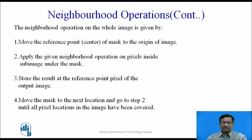Continuing neighborhood operations, the neighborhood operation on the whole image is given by this algorithm. The first step is to move the reference point, that is the center of the mask, to the origin of the image. Then apply the given neighborhood operation on pixels inside the image under the mask. Store the result at the reference point pixel of the output image. Move the mask to the next location and go to step 2, so that all pixels in the image are covered.